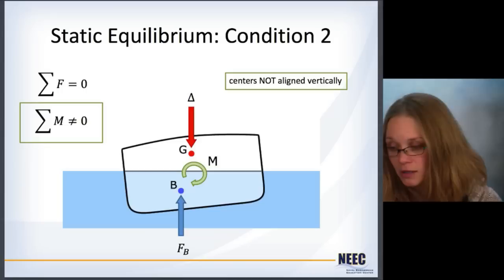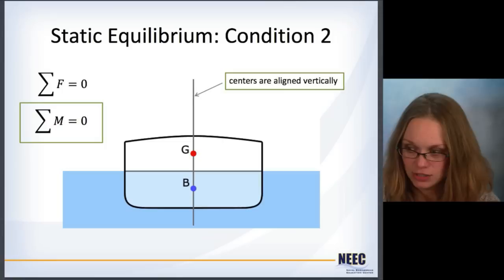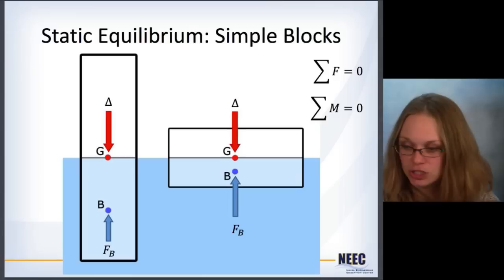If the ship is tipped, something comes along, G and B are not aligned vertically, the forces now induce a moment, and so now it is no longer in static equilibrium. But ships like to be in static equilibrium, so they will try to get back to this condition here.